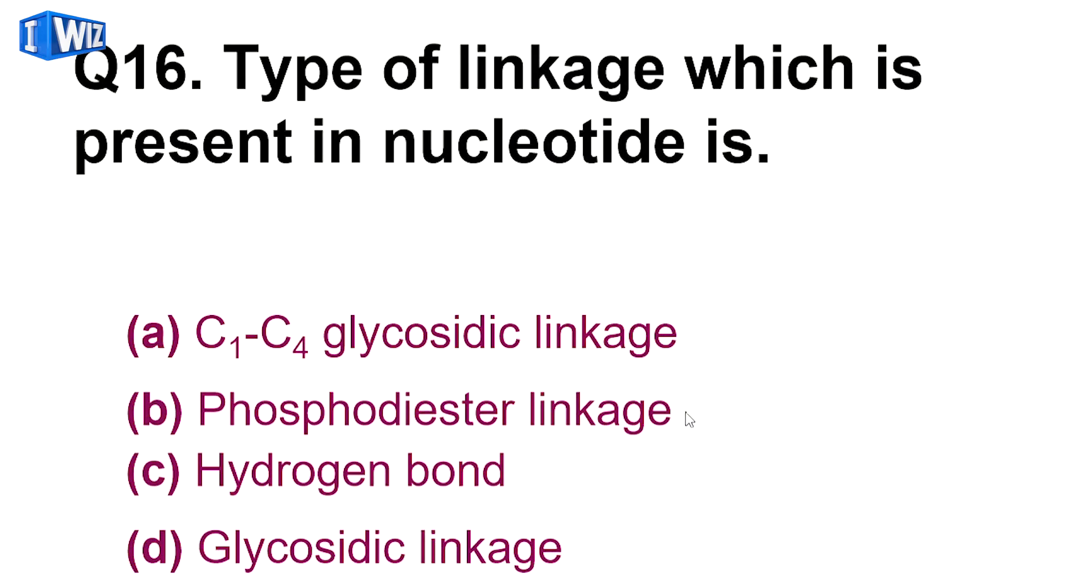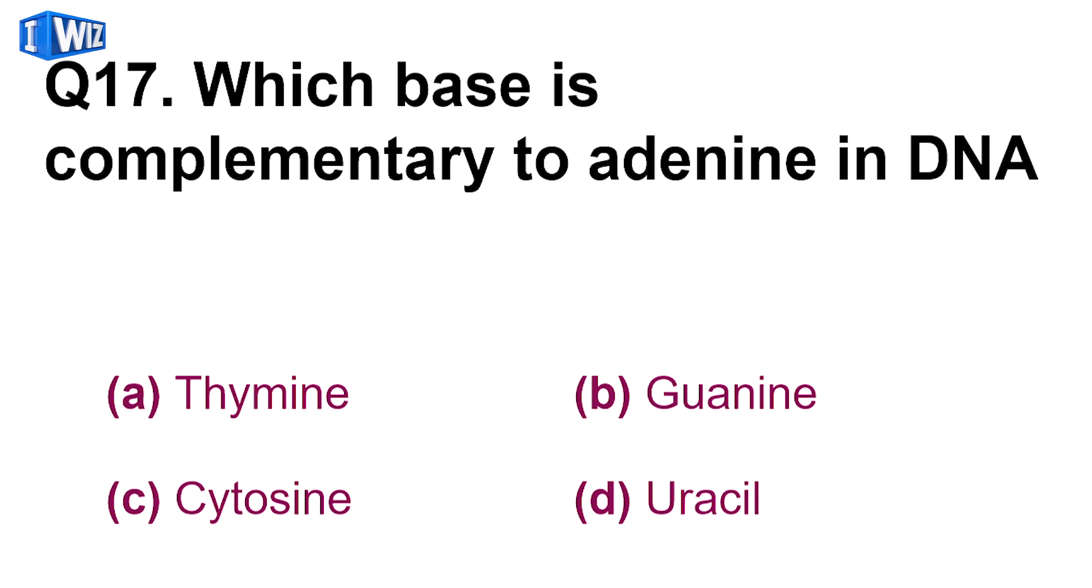Next is, type of linkage which is present in nucleotide is - so nucleotide ko join karne wali linkage hai phosphodiester bond. Nucleotides aapas mein jis linkage se judate hai, usko hum phosphodiester linkage ka naam deete hai.